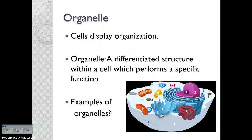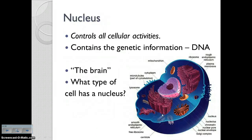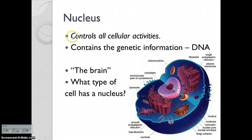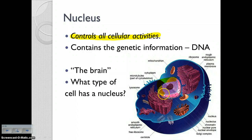I'm going to go through these pretty fast, but if I go too fast you can always pause the video or go back to any slide. The big organelle we're going to find in eukaryotic cells is the nucleus — this is the brain of the cell, it controls all cell activities. This is found in animal and plant cells, not in bacteria cells, so only in eukaryotic cells. Our nucleus holds the genetic information, so DNA is going to be found within our nucleus.